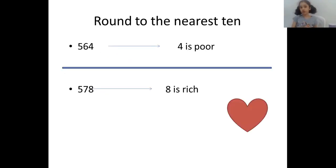Round to the nearest ten. We will underline six and circle four. Four is poor, so don't give anything. So it will be five hundred sixty.